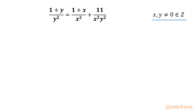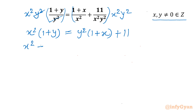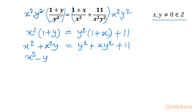Since x and y are nonzero, we can multiply both sides with x squared times y squared. After cancellation on the left-hand side, the equation becomes: x squared times (1 plus y) equals y squared times (1 plus x) plus 11. Expanding: x squared plus x squared y equals y squared plus x y squared plus 11. Taking all terms to the left-hand side gives: x squared minus y squared plus x squared y minus x y squared equals 11.